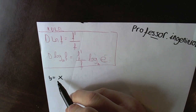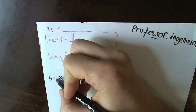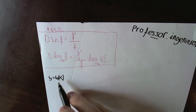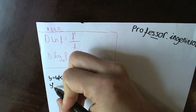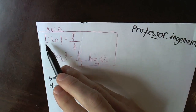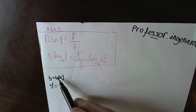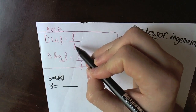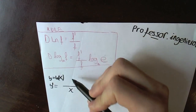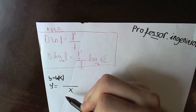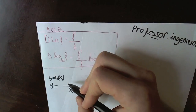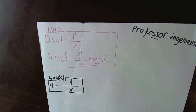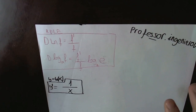If they give us the function y equals logarithm of x, and we want to calculate the derivative, we just need to apply this rule here. If we have the logarithm of any function — in this case x — the derivative is a division. In the denominator, you just put the function x, and in the numerator, you put the derivative of the function. In this case the function is x, so the derivative of x is 1. So the derivative of logarithm of x is 1 divided by x. This is the most important thing you must know about logarithm derivatives.